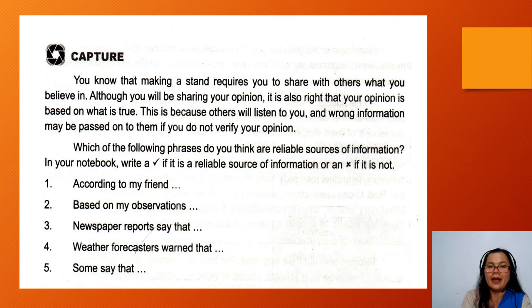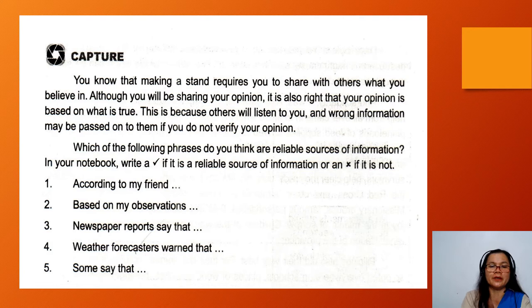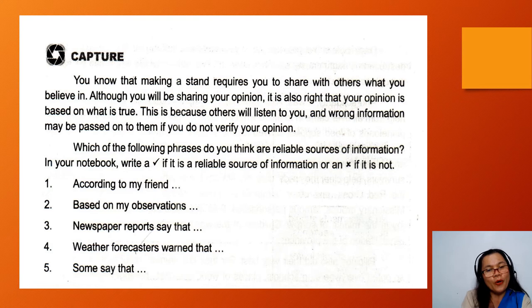Number 1: 'According to my friend.' — X, it is not a reliable source. Number 2: 'Based on my observations.' — Still not a reliable source of information. Number 3: 'Newspaper reports say that.' — Check, it is a reliable source of information. Number 4: 'Weather forecasters warn that.' — Check, it is a reliable source. Number 5: 'Some say that.' — X, it is not a reliable source of information. Good job!